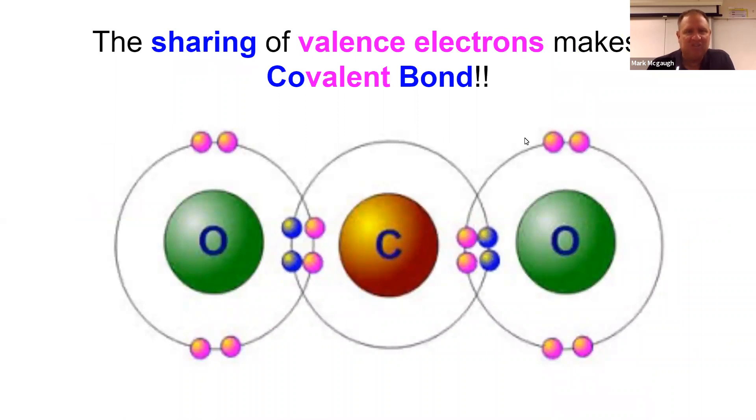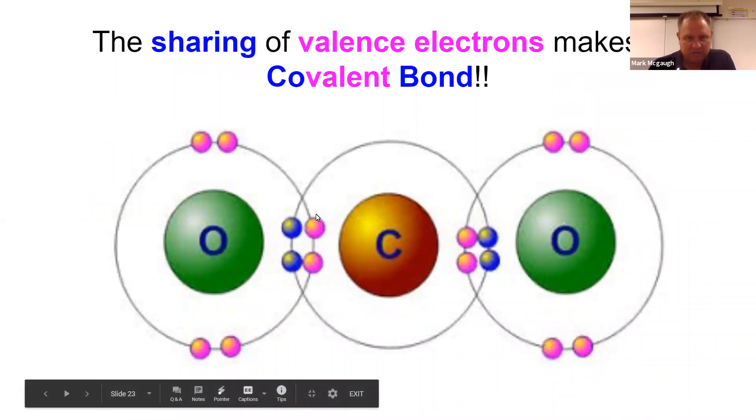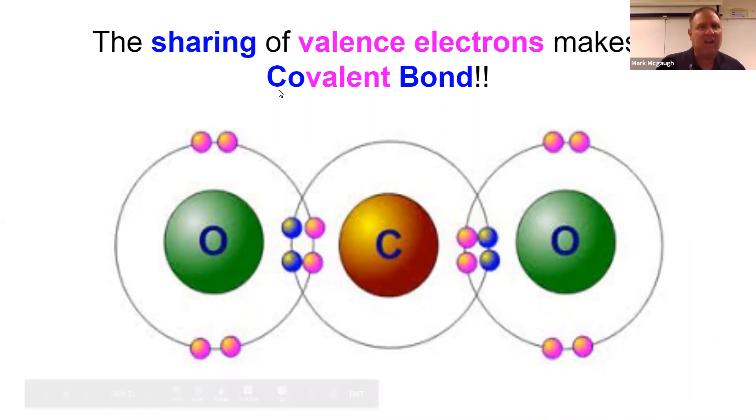Covalent bonding is the sharing of electrons. Co means share, valent means valence electrons. It's the sharing of electrons that forms a covalent bond.